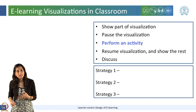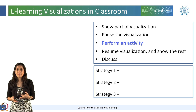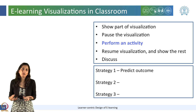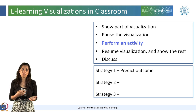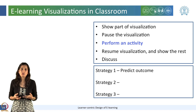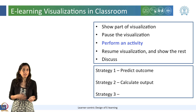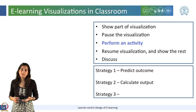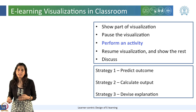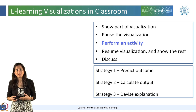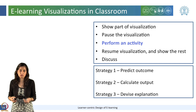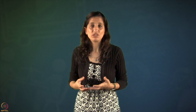Three different strategies can follow these steps. Strategy one is predict outcome, where during the activity phase students predict the outcome of a phenomenon shown in the visualization. Strategy two is calculate output, where students are asked to calculate the output or next step of the process shown in the visualization. Strategy three is devise explanation, where students devise an explanation for a given process or phenomenon shown through visualization. One such strategy should be chosen based on the pedagogical purpose and the learning outcome.